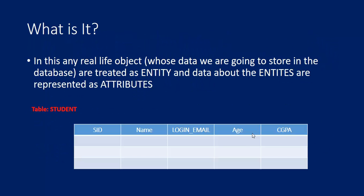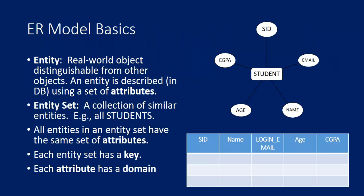To summarize the basics: an entity is a real-world object distinguishable from other objects. An entity is described in the database using a set of attributes, as you can see in the diagram.